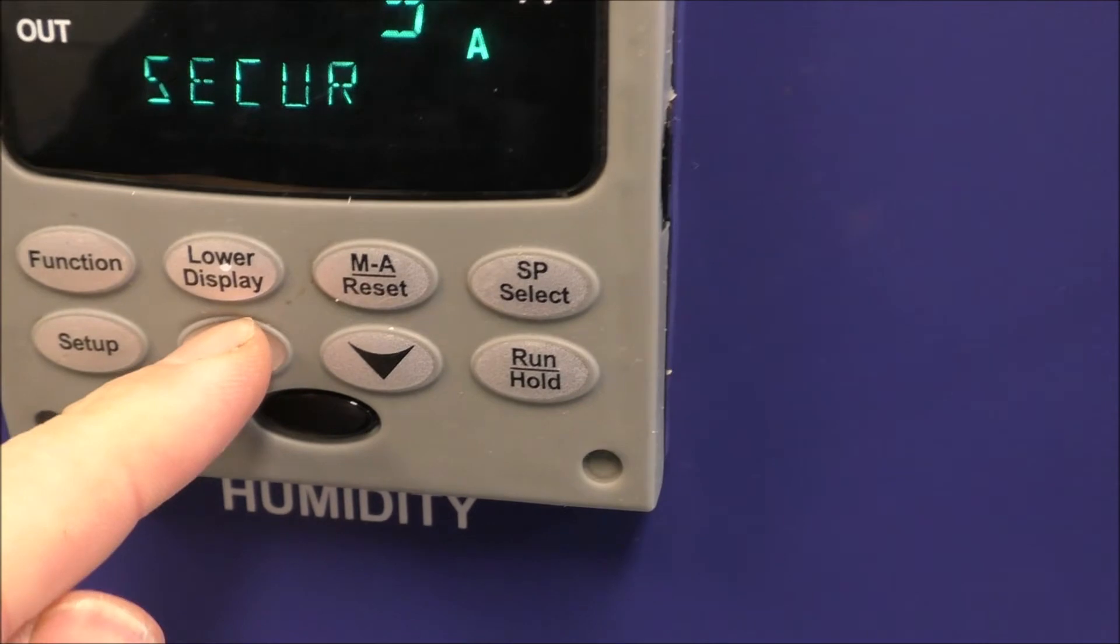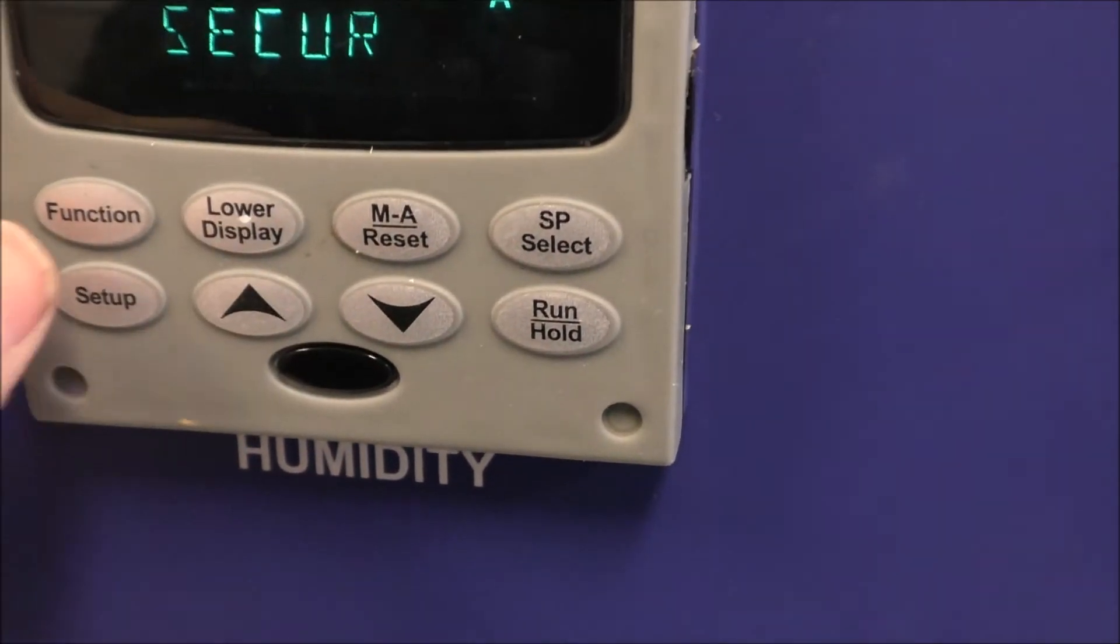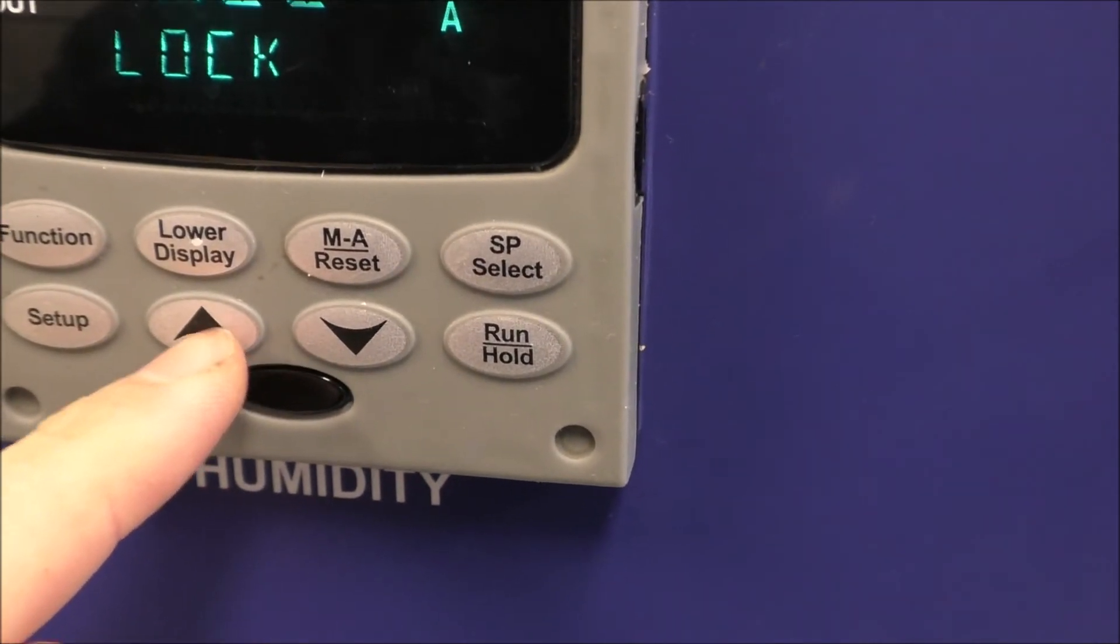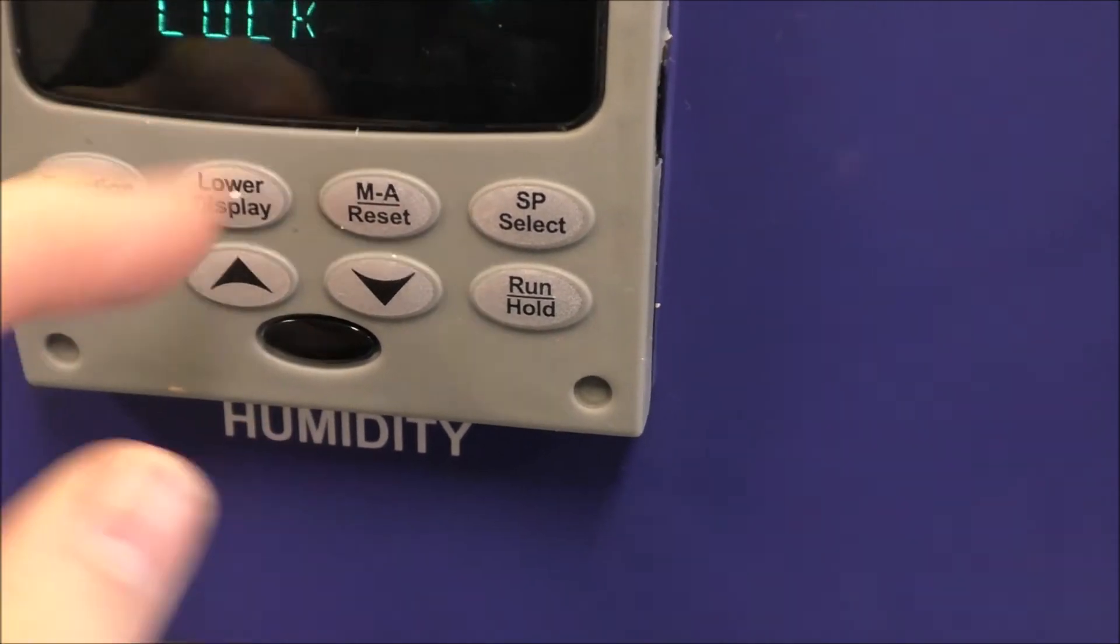Push the up arrow until you get to three. Push function again where it says lock. Push it up so that it says none.